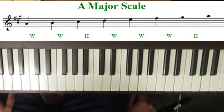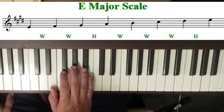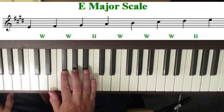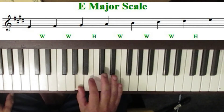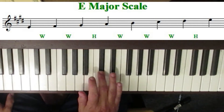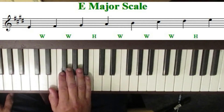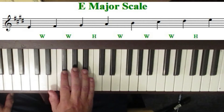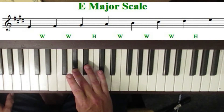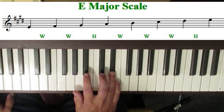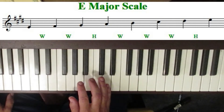Let's move now to the key of E major. E major is interesting because a whole step up from E is F sharp, so right away we have to go to the black keys. E, whole step to F sharp, whole step to G sharp, half-step to A, whole step to B, whole step to C sharp, whole step to D sharp, rounding it off with a half-step back to E. So the key of E major has four sharps in it.